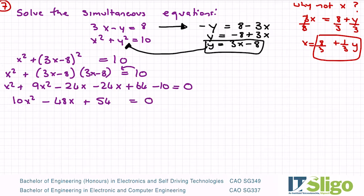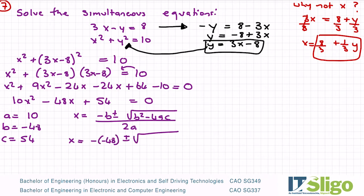Now you can factorize it or you can use the formula. At this stage I'm going to use the formula, so a is 10, b is equal to minus 48, c is equal to 54. Of course I could have divided across by 2 to make things easier but it doesn't matter if you didn't.